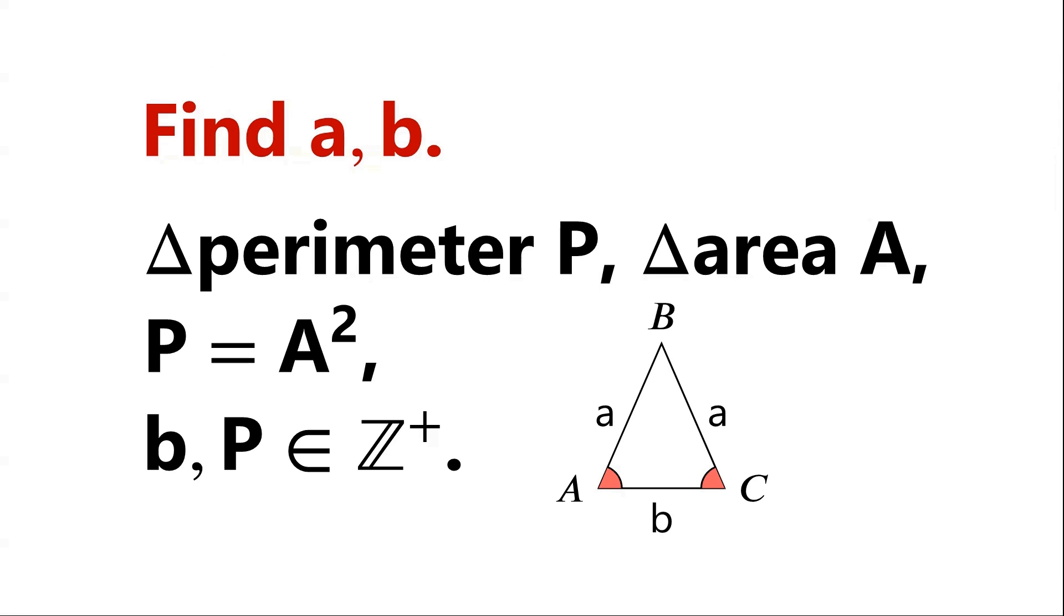This is a British Mathematical Olympiad problem. In an isosceles triangle, A is the length of the two equal sides, and B is the length of the third side. The perimeter of the triangle is denoted by P. The area of the triangle is denoted by A. Given that P equals A squared, and the length of the third side B, and the perimeter P, both are positive integers. Find the lengths of the triangle, A and B.